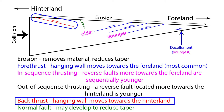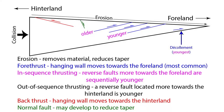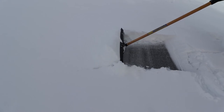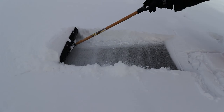Back thrusts dip towards the foreland with the hanging wall moving towards the hinterland, and they increase wedge taper. Normal faults may also develop within the wedge, which reduces taper. Folds will develop throughout the wedge as well. Now that we understand the theory behind fold and thrust belts, the second video in this series will detail the development of a fold and thrust belt created by pushing snow with a snow shovel.